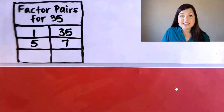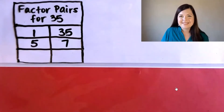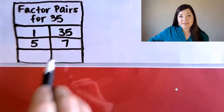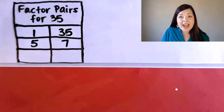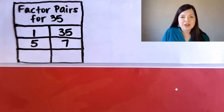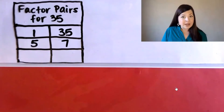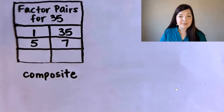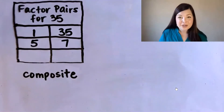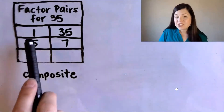Should we continue and test whether 8 is a factor of 35? No, we don't have to. We've already tested all of the numbers up to 7, and we found that 5 and 7 is a factor pair for 35, which means there won't be any more factors of 35 greater than 7. So, looking at the factor pairs for 35, is 35 a prime number or a composite number? 35 is a composite number because it has more than one factor pair — it has more factors besides just 1 and itself.